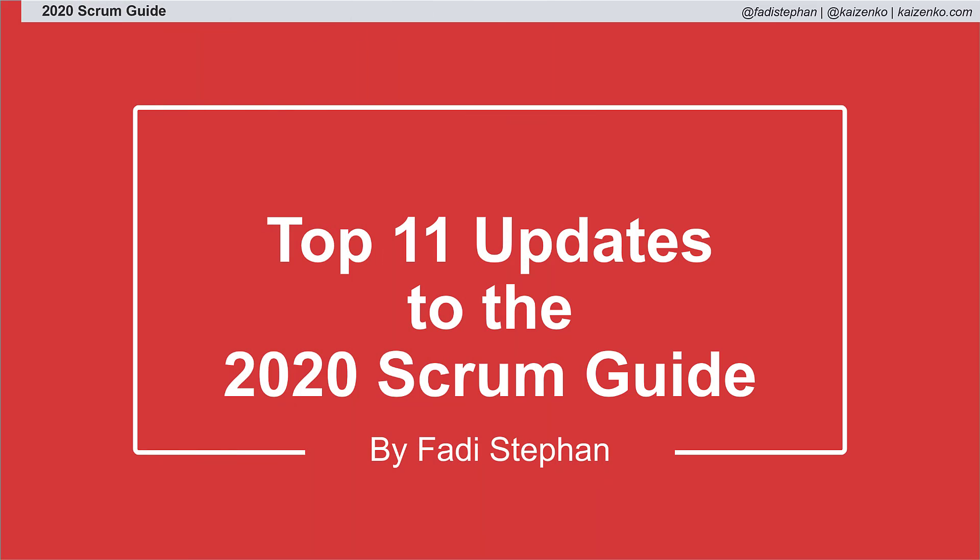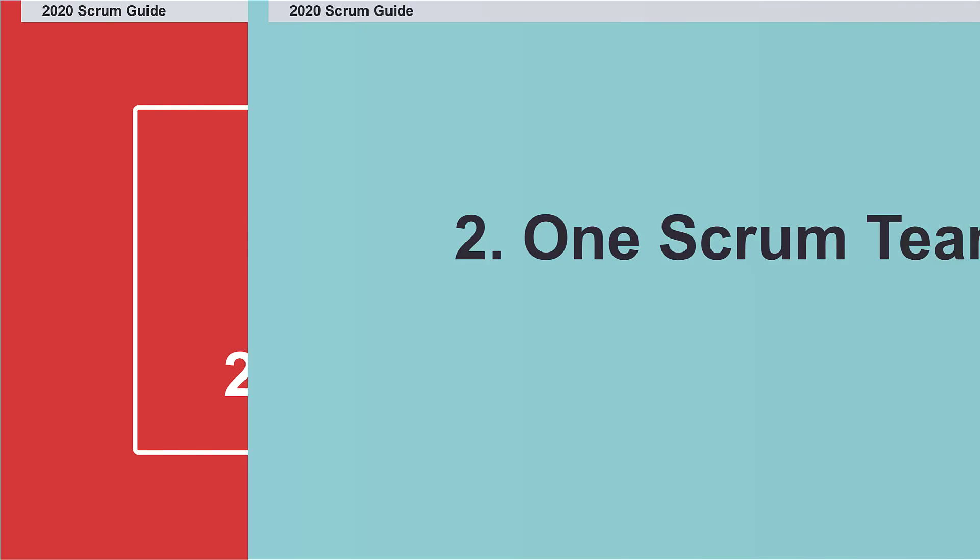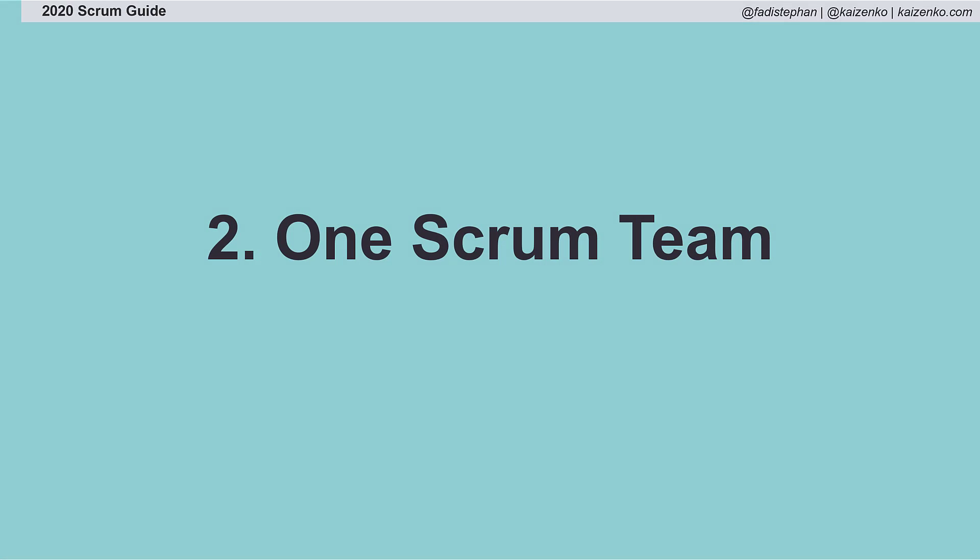Welcome back to the series on the Top 11 Updates to the 2020 Scrum Guide. Next up is the emphasis on one Scrum team with three accountabilities.